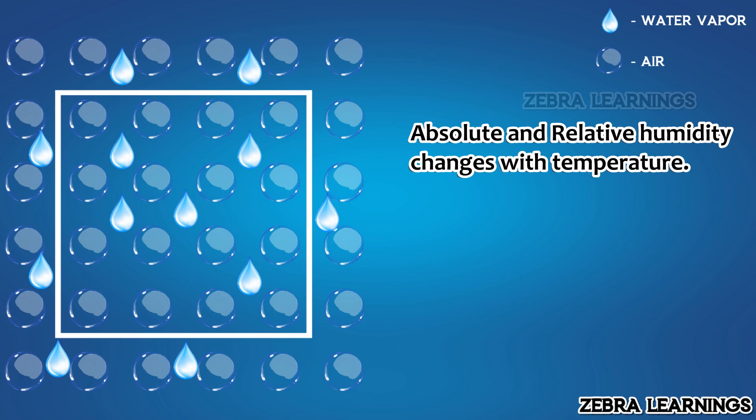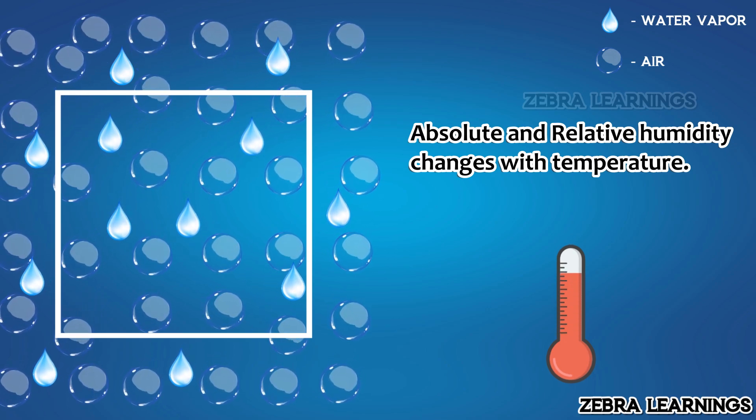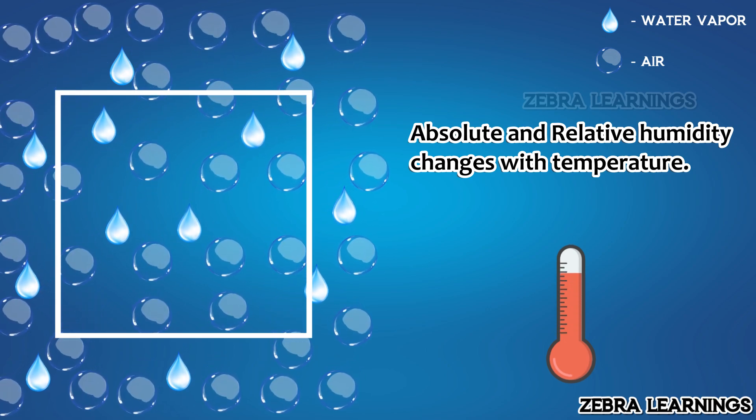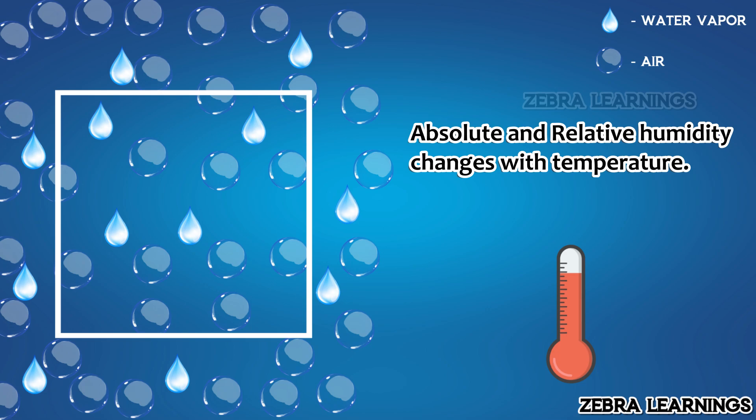We mentioned earlier that the values of these two types of humidity change when the temperature changes. When the temperature increases, the air molecules expand. As the molecules expand, some air molecules and some water vapor escape from this one cubic meter area. Because of this, the absolute and relative humidity values in this one cubic meter area will change with temperature.